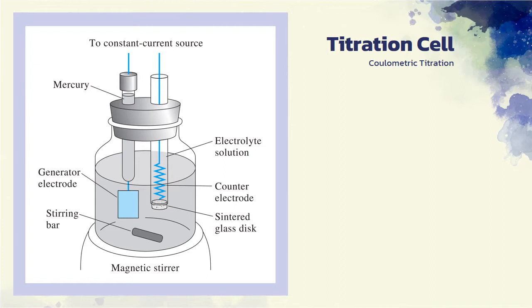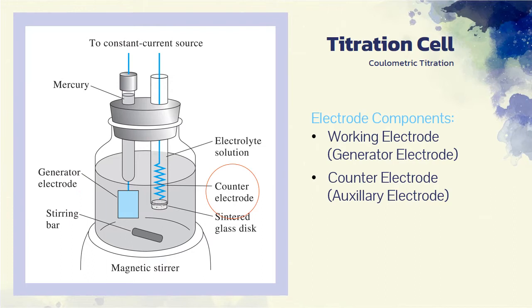This figure shows a typical coulometric titration cell consisting of a working electrode at which the reagent is produced and a counter or auxiliary electrode to complete the circuit. The working electrode used to generate reactants in situ is often referred to as the generator electrode. It is usually a platinum rectangle, a coil of wire, or a gauze cylinder with a relatively large surface area to minimize polarization effects. The counter electrode is usually isolated from the reaction medium by a sintered disk or other porous medium to prevent interference by the reaction products from this electrode.